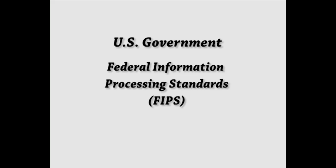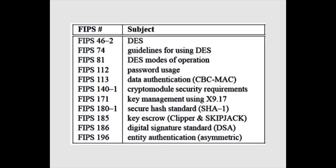Let us move on to US Government Federal Information Processing Standards. These are publicly announced standards developed by the United States Federal Government for use in computer systems by all non-military government agencies and by government contractors when properly invoked. The purpose of FIPS is to ensure that all federal government agencies adhere to the same guidelines regarding security and communication. These are developed under NIST National Institute of Standards and Technology for use by US Federal Government departments.